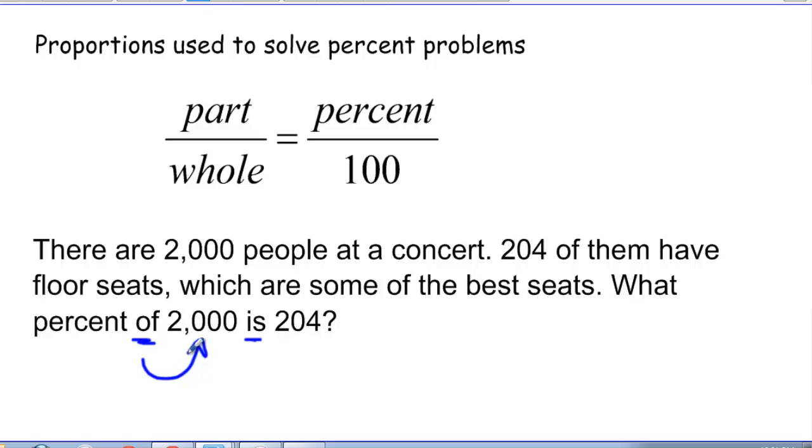If you see the word "of," the number that comes directly after that word is the whole. And when you see that word "is," the number that comes directly after that word is the part.